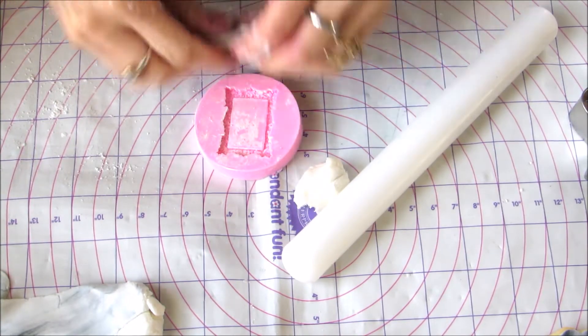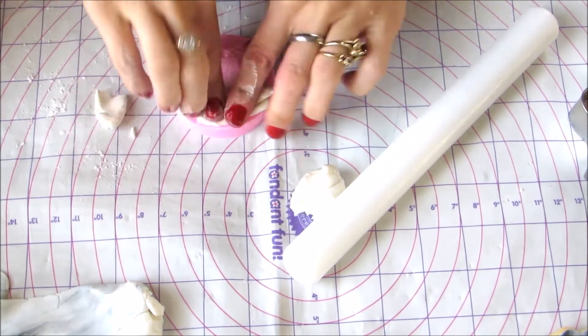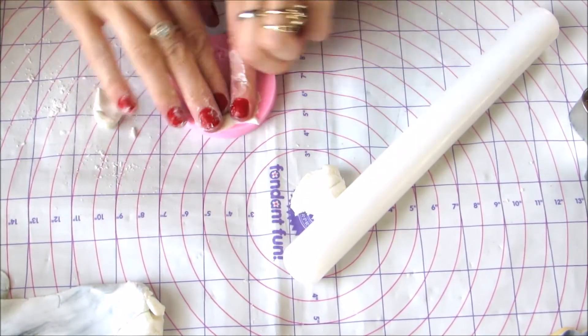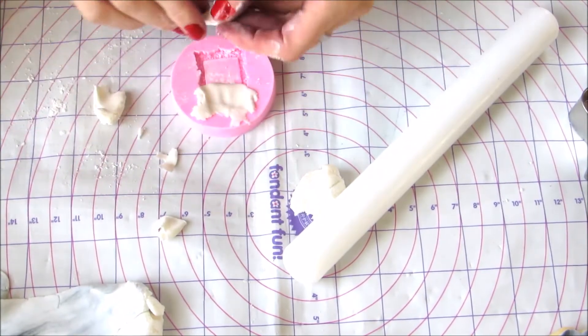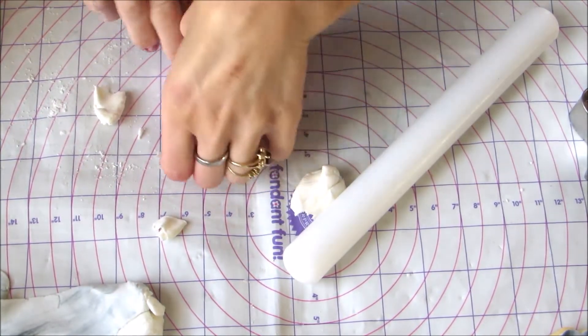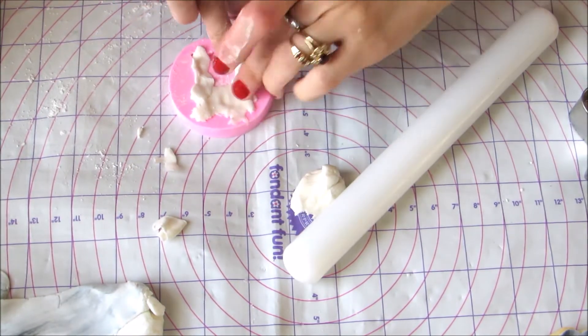You then stick the gum paste into the mold. I do it in little pieces. There are all different ways to do this—whatever works for you. Some people like to roll out an entire piece of gum paste or fondant. I just prefer it this way because I find it easier.